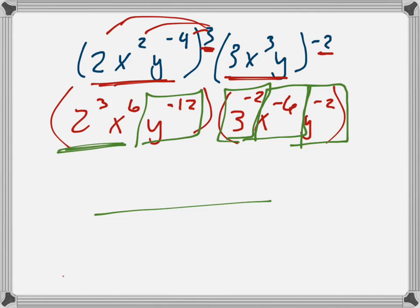These things stay in the top, so 2 cubed is 8. x to the sixth stays in the top. y to the twelfth goes to the bottom. 3 squared, I like to put the numbers in front, 3 squared is 9, goes to the bottom. x to the sixth goes to the bottom. And y squared goes to the bottom.